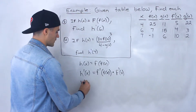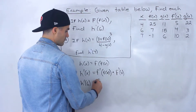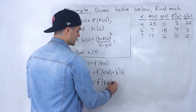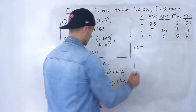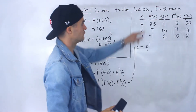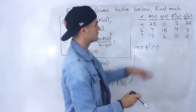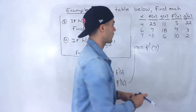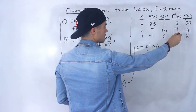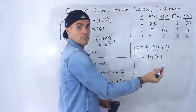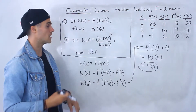They're asking for h prime of 6, so we plug in 6 for all the x values: we'd have f prime of f of 6, times f prime of 6. So f of 6 is 7, and f prime of 6 is 4. We're multiplying that by 4. And f prime of 7 — the value of f prime at x equals 7 — is 10. We're still multiplying by 4, so we end up getting 40. That is the answer for h prime of 6.